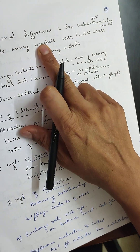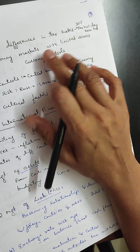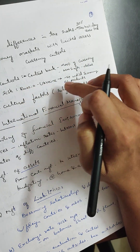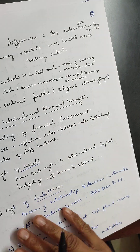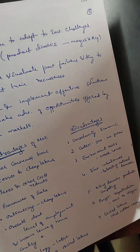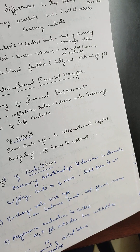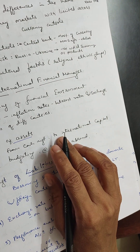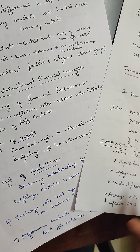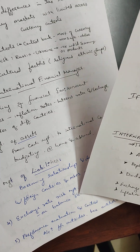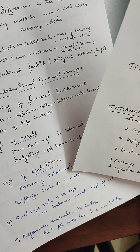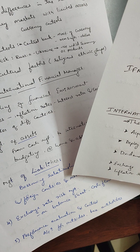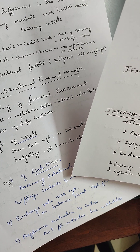Key differences in the international financial environment include: international differences in tax rates, multiple money markets with limited access, currency controls, exchange controls, political risk, and sociocultural factors.